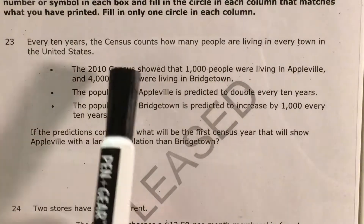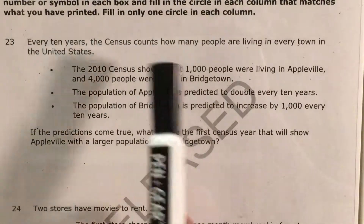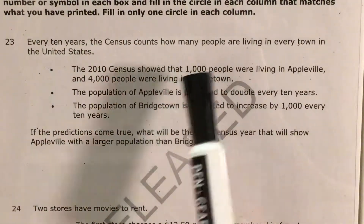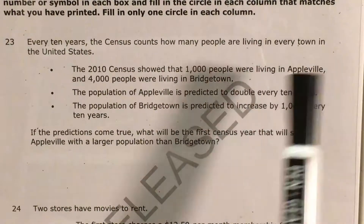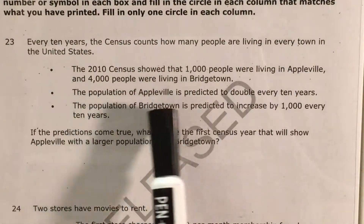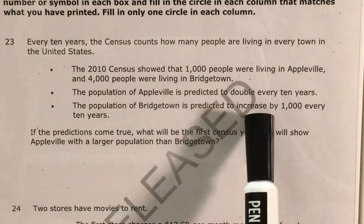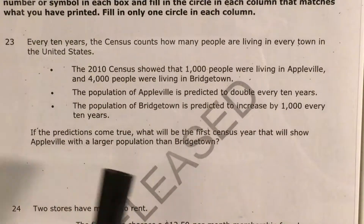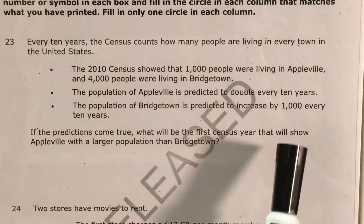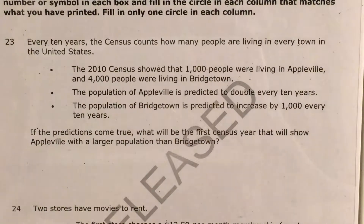The question tells us that as the United States keeps taking its census every 10 years, in 2010 a thousand people were living in Appleville and 4,000 in Bridgetown. Appleville's population doubles every 10 years, Bridgetown's population increases by a thousand every 10 years, and we're trying to figure out the first census year that will show Appleville with a larger population than Bridgetown.